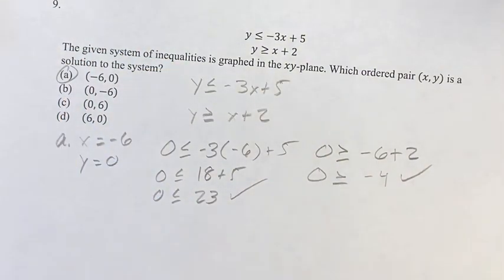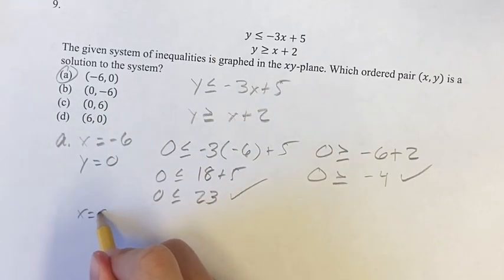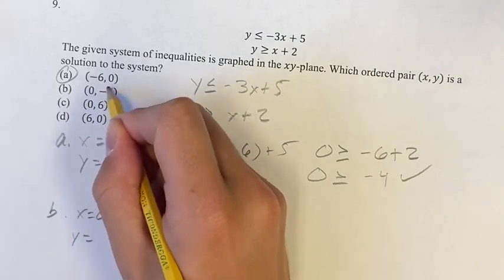I will actually show you b. You can see an example of something that doesn't work. This one, we're going to have x is equal to 0, and y is equal to negative 6.